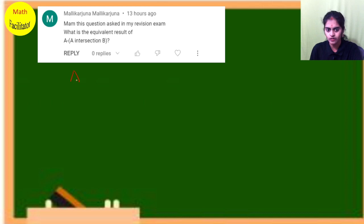Let me decode the question: A minus A intersection B. They're asking what is the equivalent result of this. First, let me see what is A intersection B.